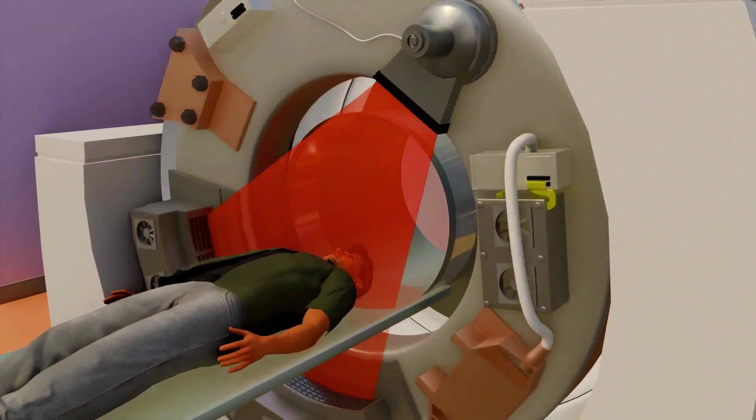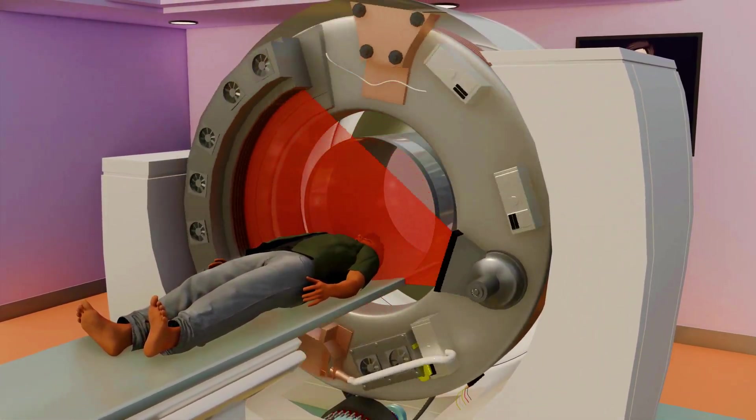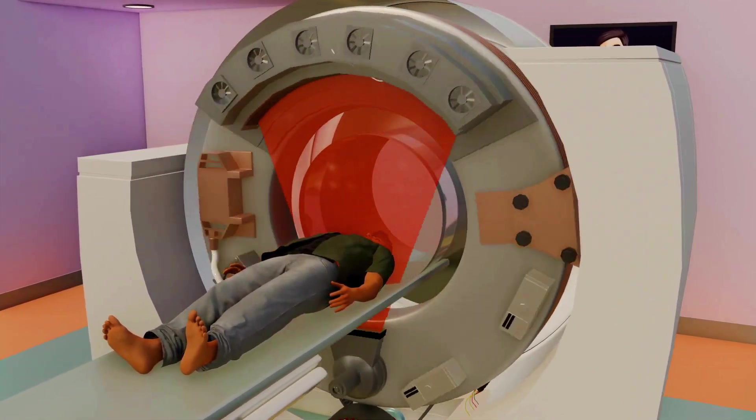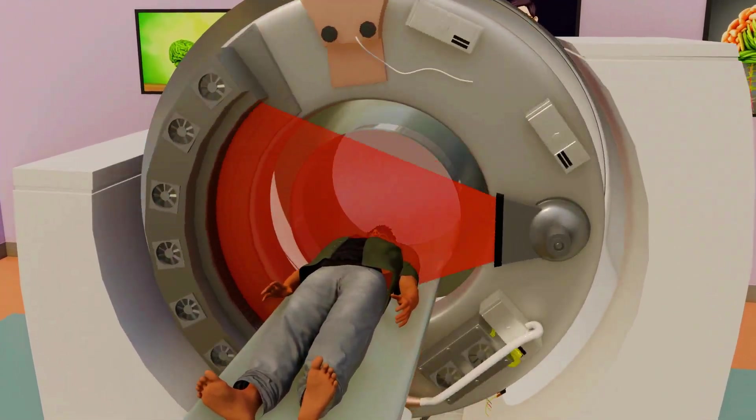The rotating part of the CT scan machine is called the gantry. Its rotation speed ranges from 0.25 to 1 second per rotation. Modern CT scan machines rotate at much higher speeds, and can capture multiple slices simultaneously.